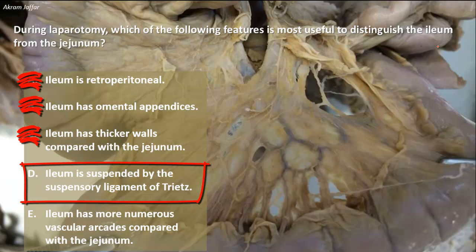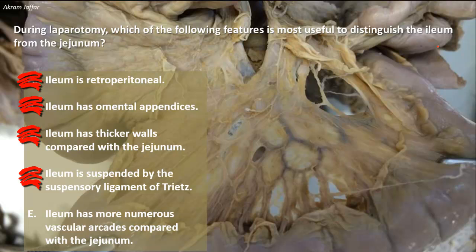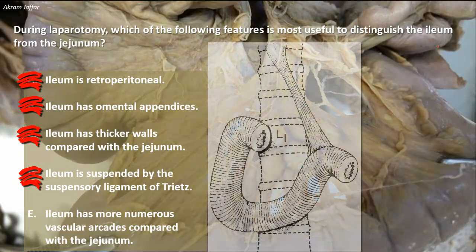The fourth option: the ileum is suspended by the suspensory ligament of Treitz. This is wrong as well. The ligament of Treitz actually suspends the small intestine at the duodenal-jejunal junction. The duodenal-jejunal flexure is supported by this suspensory ligament. Sometimes it contains muscle fibers and is connected at the right crus of the diaphragm. Its contraction widens the angle of the duodenal-jejunal flexure and facilitates movement of intestinal contents. It is connected at the junction of the duodenum and jejunum and has no relation to the ileum, so option D is wrong.